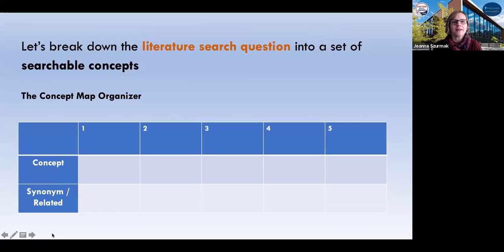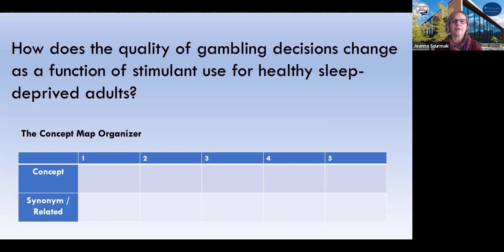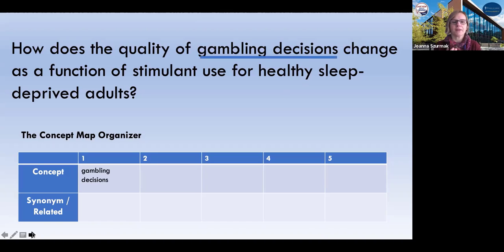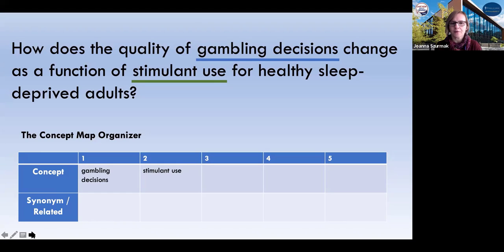Now let's grab a concept map organizer. It's the simplest organizer that helps us break down the concepts in our question into the most significant concepts. The very first thing we encounter here is the quality of gambling decisions — so I'm going to put in gambling decisions. What's the intervention? It's the use of a stimulant to improve the quality of decisions. So we've got the thing that we're measuring, gambling decisions, and we've got our intervention, stimulant use.